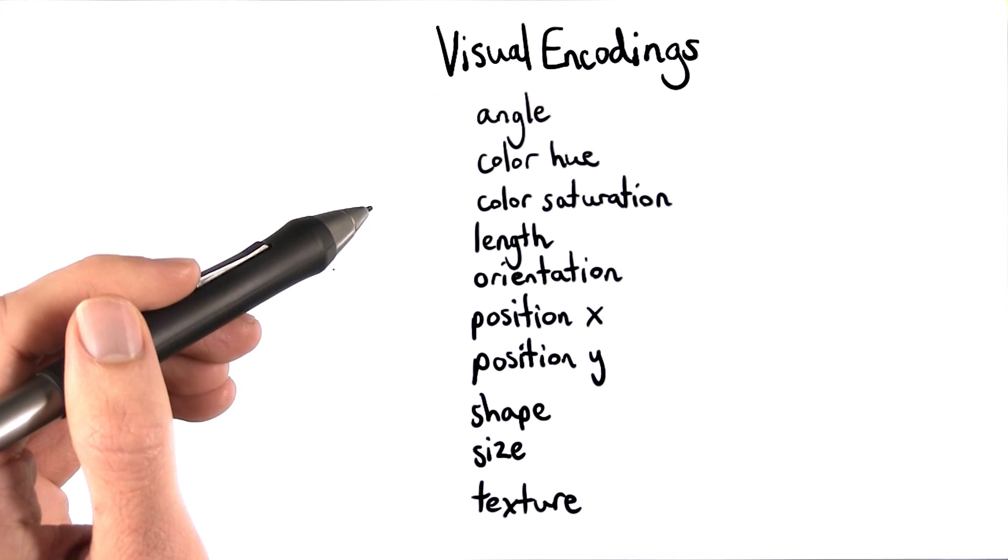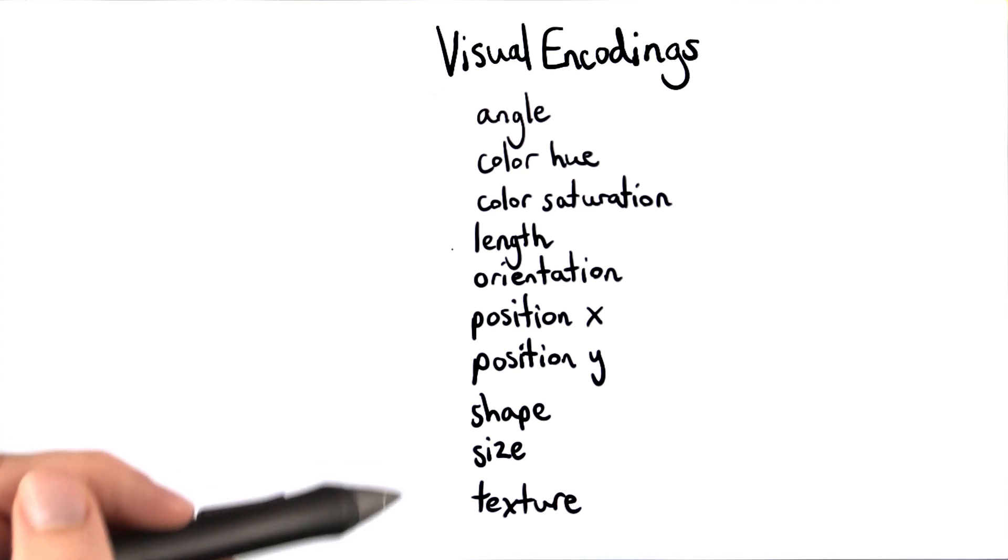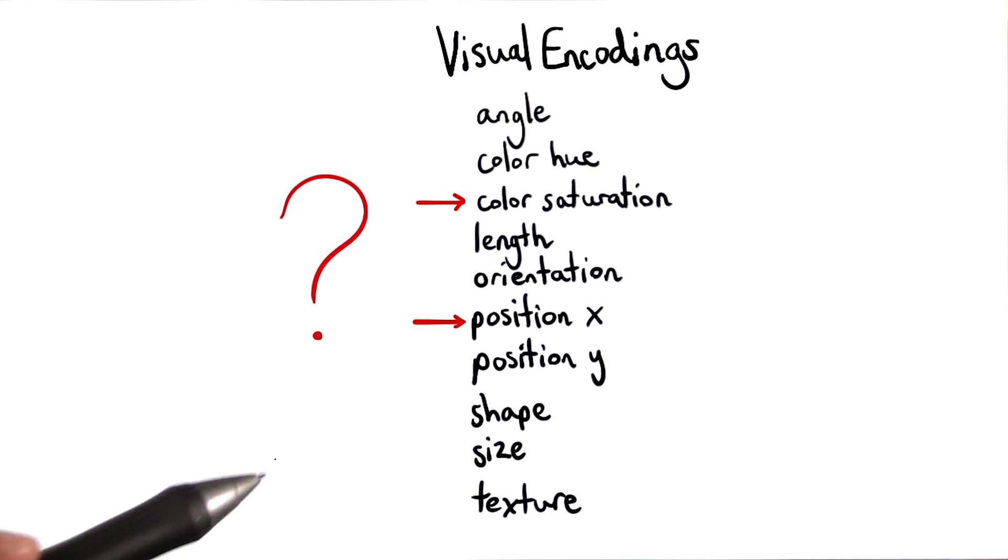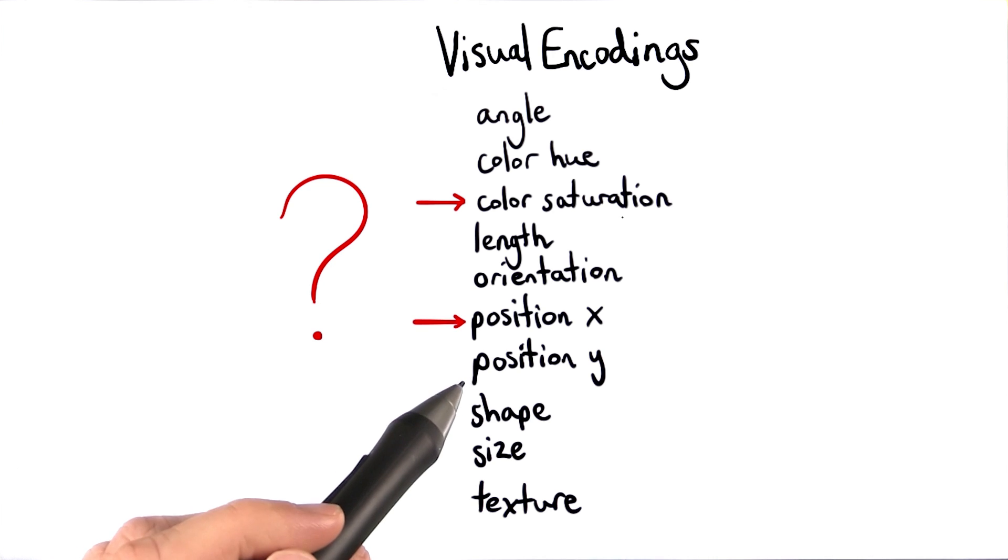We've seen a variety of graphics and their visual encodings up to this point. But we haven't discussed which of these is most effective. How should we know whether to encode a quantitative variable in color saturation or rather than, say, position?